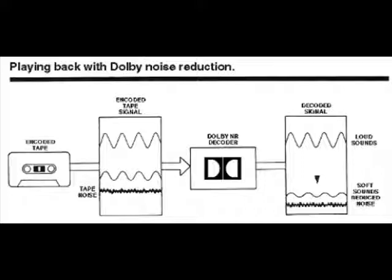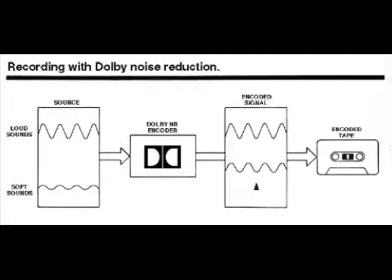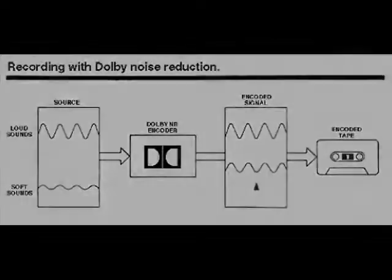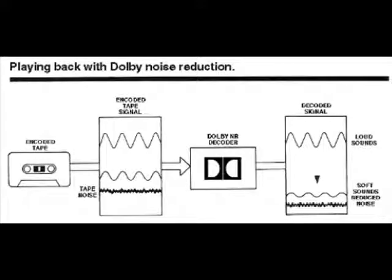What this does, of course, is return the dynamics of the original audio back to where they should be, and in the process of doing that, it lowers the noise by 10 dB. Since the original recording has the high frequencies boosted, more detail of what is in that band is recorded on the tape, since it's recorded above the noise. And when it's played back, even though those frequencies are put back to their original levels as they were in the original recording, you still are able to hear more detail because the original recording was above the noise.